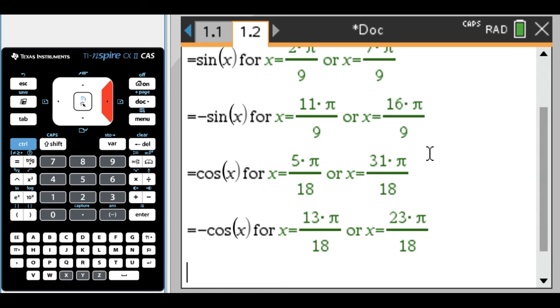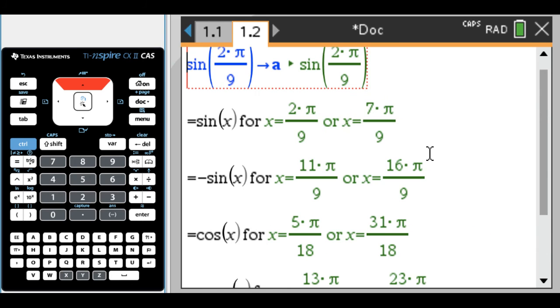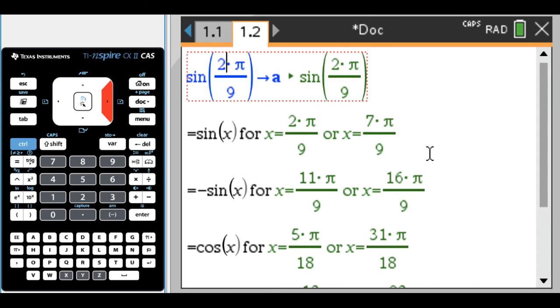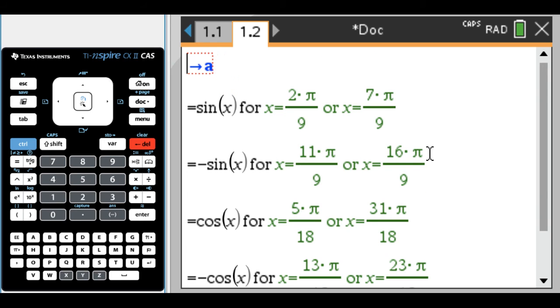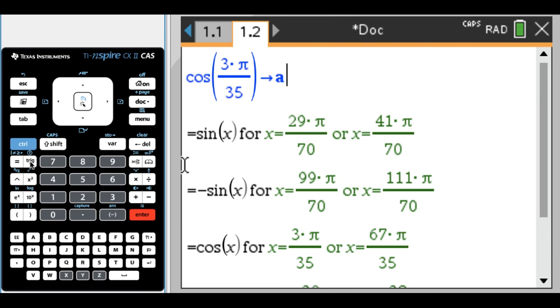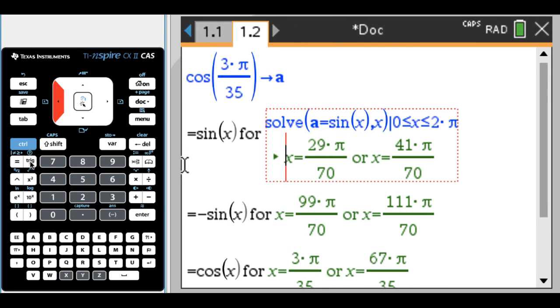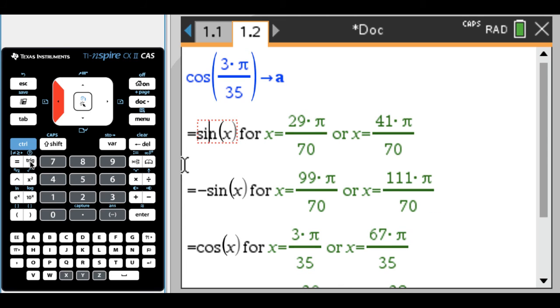So if you stay kind of in the left hand column here, you can scroll pretty quickly. So this is really nice because it auto updates. So if I change this - let me delete, delete, delete. Let's say that I want to deal with the cosine of 3 pi over 35. I don't know why. Press enter. It gives you all of these values. And as long as you stay on the left hand side, you can scroll through them pretty quickly.